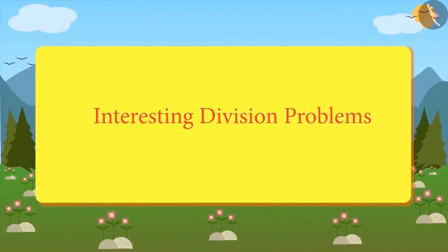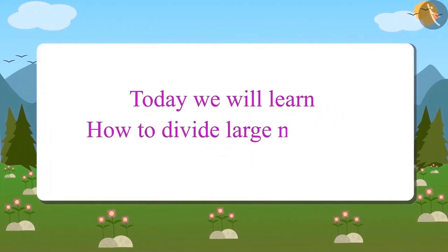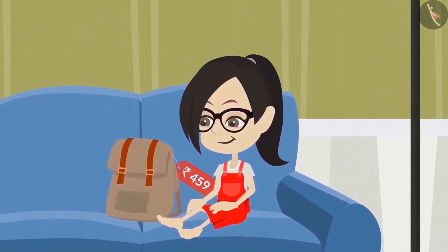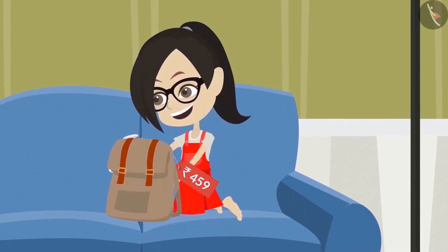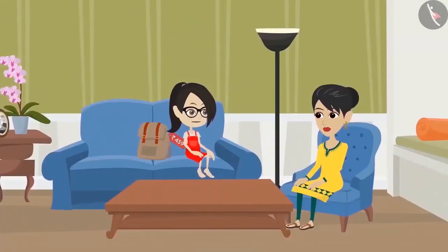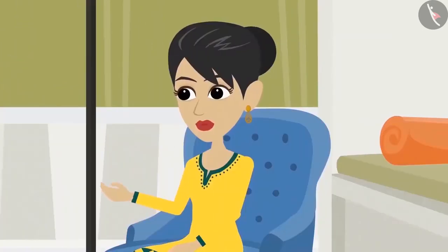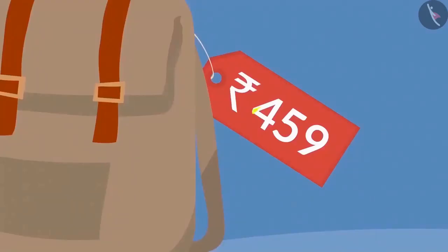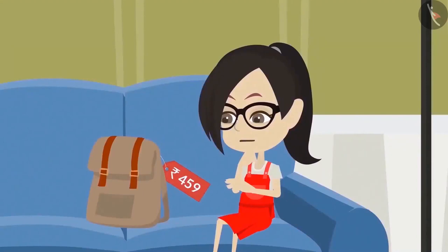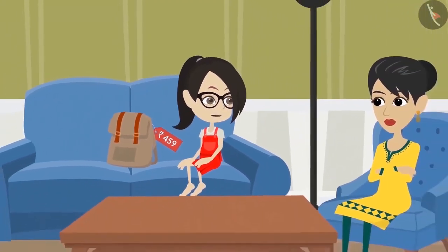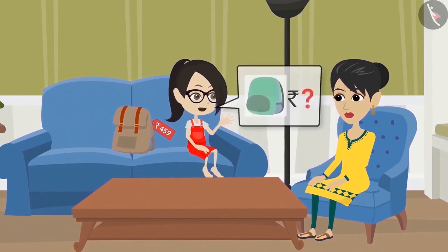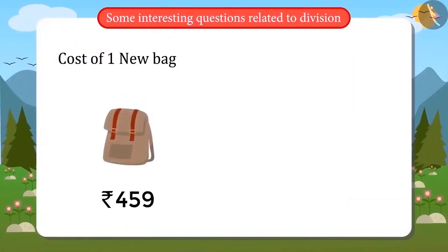Interesting Division Problems Part 4. Today we will learn how to divide large numbers. Mummy has brought a new school bag for Vandana. Vandana is very happy and asks her mother: Mum, how much did this bag cost? It cost 459 rupees — look, there is a tag on it with 459 written on it. Vandana finds it very expensive. Mum, this is very expensive. Yes, it is expensive, but I liked it so I bought it.